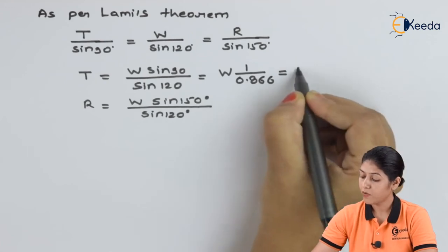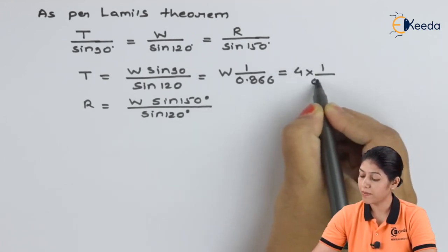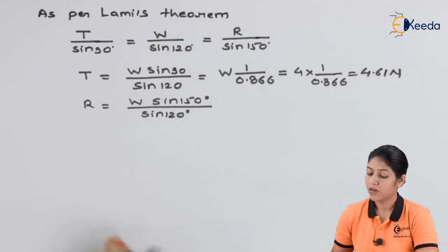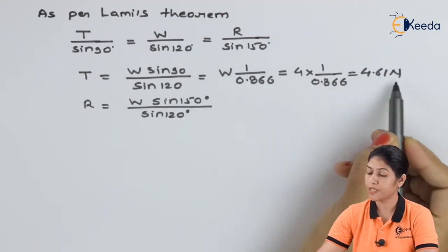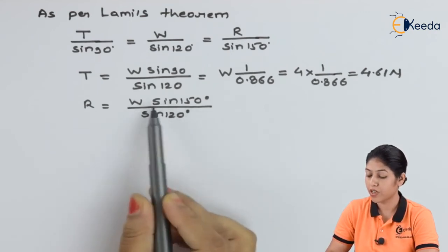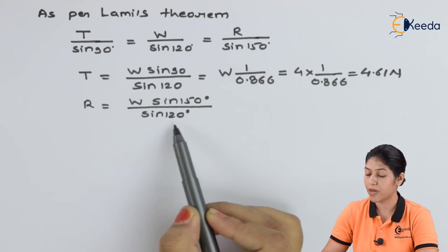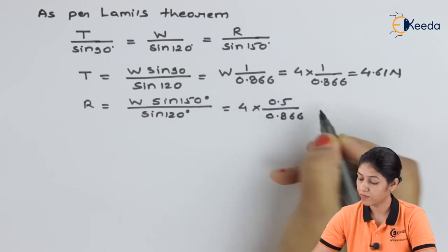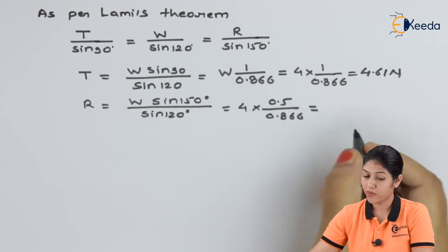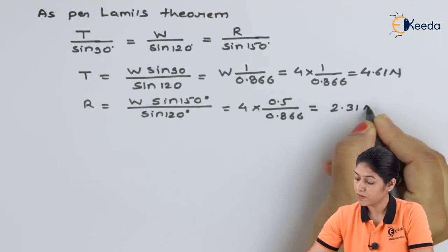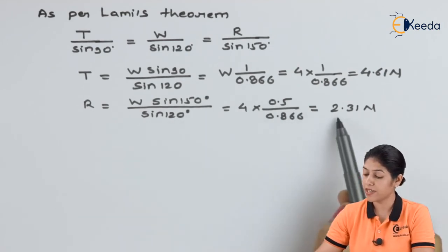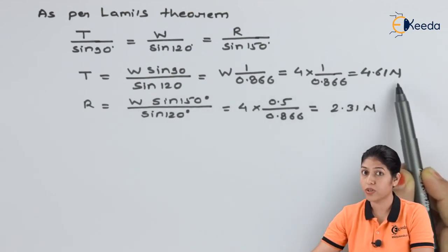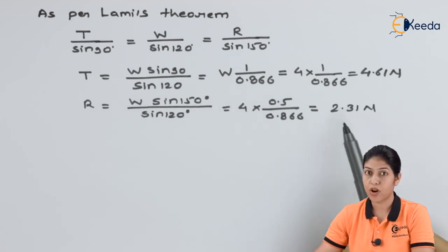The final value of T is 4.61 Newton. To find R, we use R equals W times sine 150 divided by sine 120, giving R equals 2.31 Newton. So the tension in the string is 4.61 Newton and the reaction at the support is 2.31 Newton. This is one method to solve this numerical.